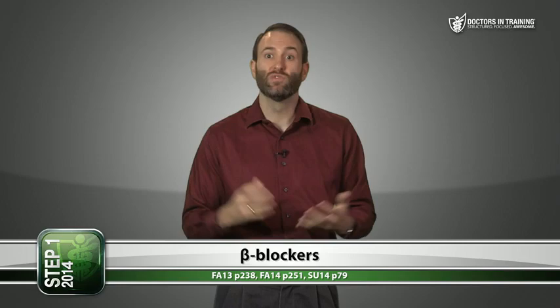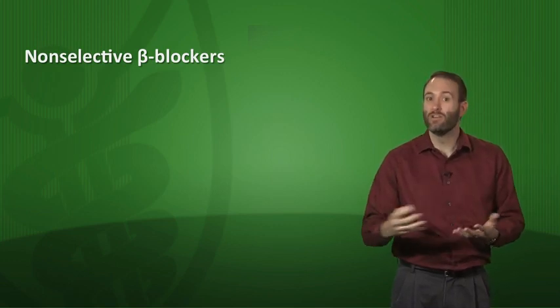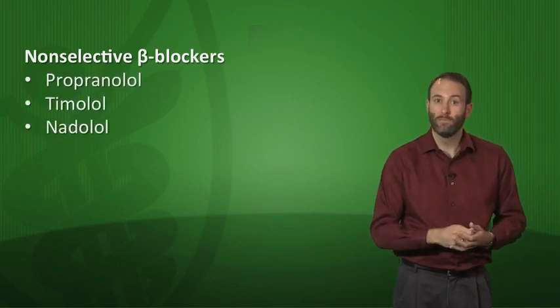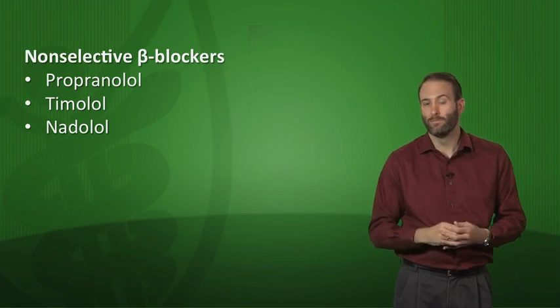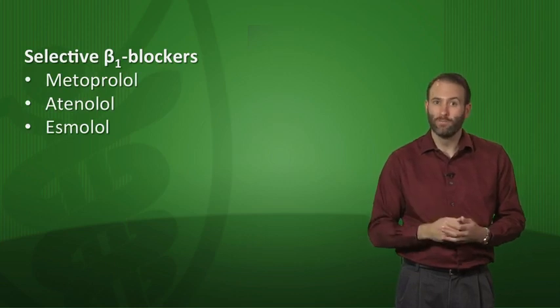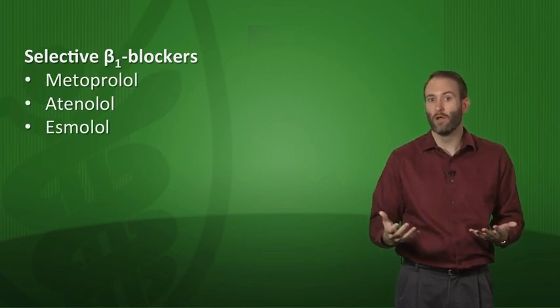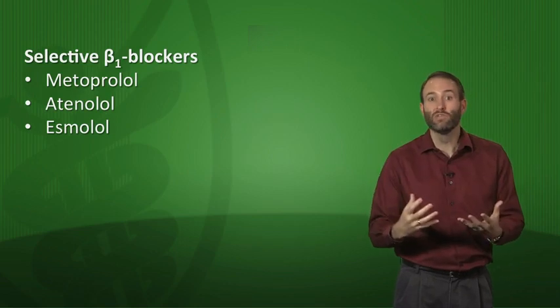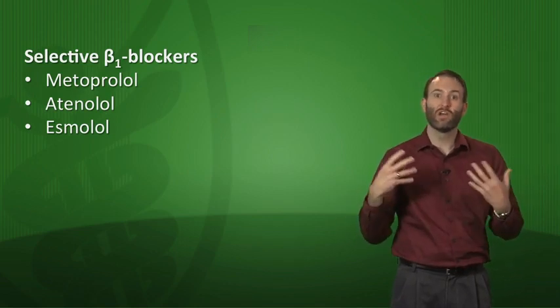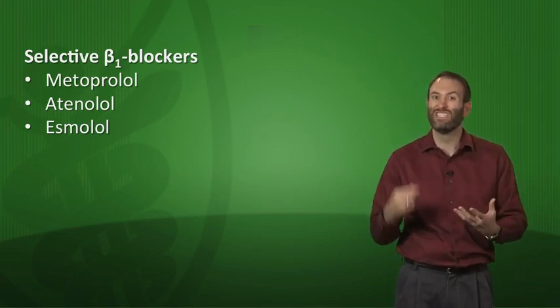The next class of sympathetic inhibitors are the beta blockers, and we use these all the time. We have a few subgroups depending on which receptors we're inhibiting. First, the non-selective beta blockers block both beta-1 and beta-2, and include propranolol, timolol, and nadolol. The beta-1 selective drugs include metoprolol, atenolol, and esmolol. There aren't any clinically usable beta-2 selective drugs, so when we say selective for beta blockers, it means just beta-1.